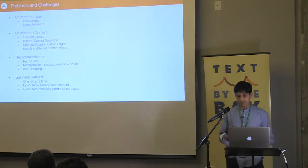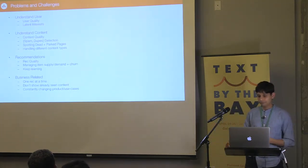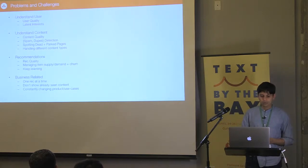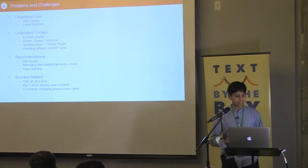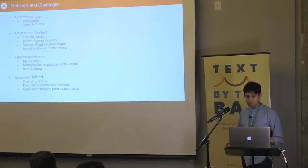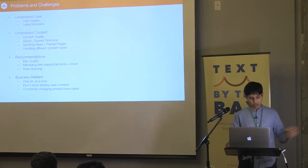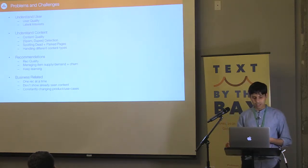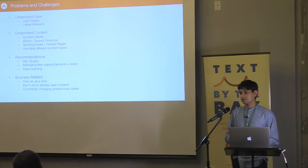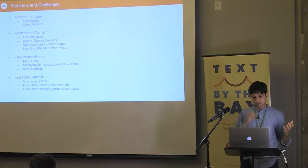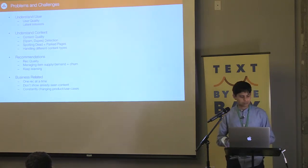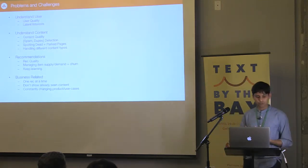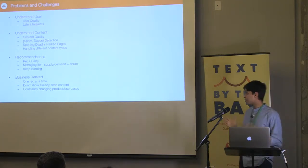Managing item supply demand and also item churn. Item supply demand is basically if someone is following some really niche topic, you want to make sure that you have enough content in the topic. Churn is where you don't want to pigeonhole people into seeing the same thing over and over again. So you want fresh stuff to come up. Keep learning. Any models, any machine learning models that you deploy, everything should refresh itself. There is no one-off runs.